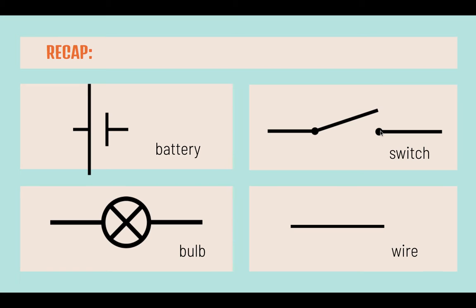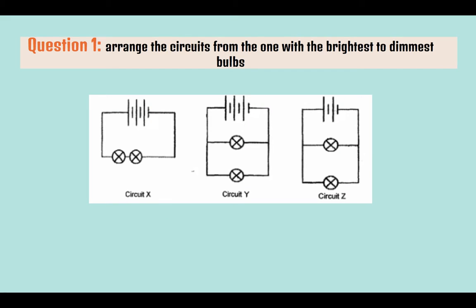Let's try out some questions. Question 1: Arrange the circuits from the one with the brightest to dimmer bulbs. Remember that series circuits have only one path for current to flow through, and parallel circuits have more than one path. Pause the video to try out the question.